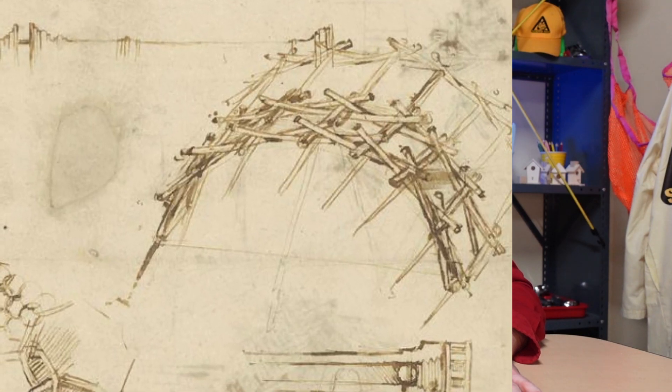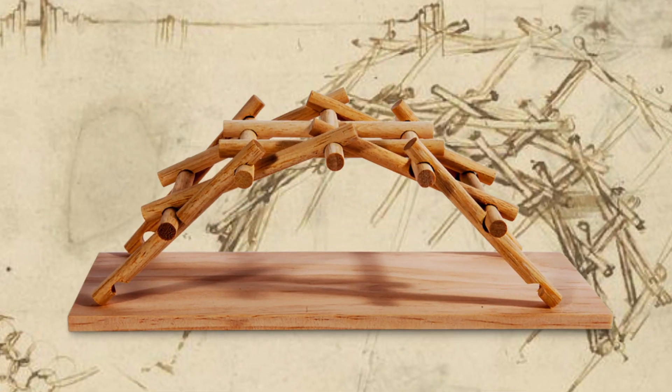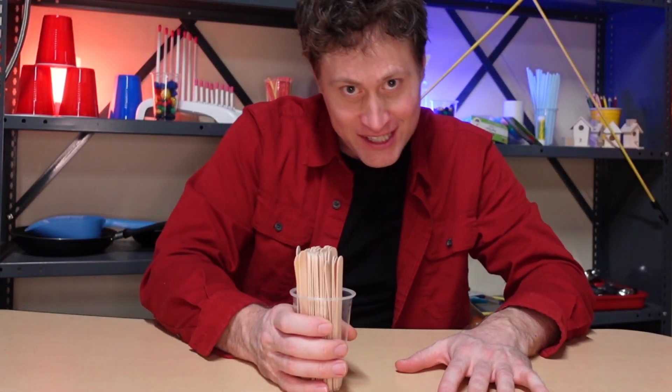Leonardo da Vinci was this awesome guy who invented a whole bunch of stuff. And one thing that he invented, which was pretty cool, is a self-supporting bridge. That's a bridge that's built without using any fasteners or glue or tape. And we're going to recreate it today with popsicle sticks.